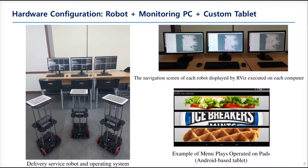The hardware configurations are the following: three service robots with three SBCs inside each robot, three Android tablet PCs for the order, and three remote PCs, monitors, and keyboards. The tablet PC acts like a menu, and the remote PC runs the navigation package for each robot.